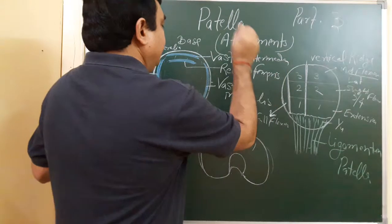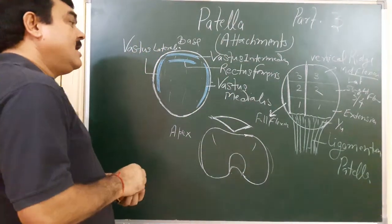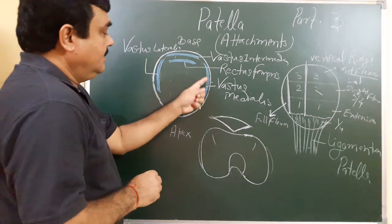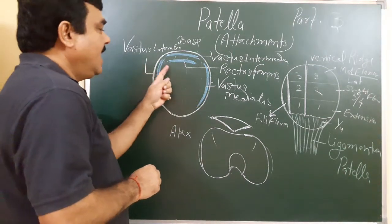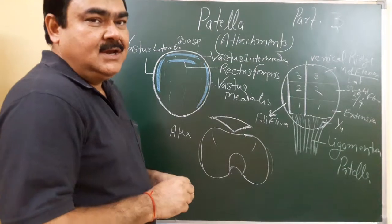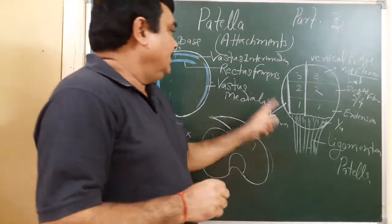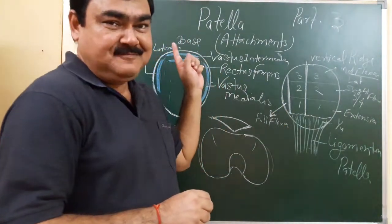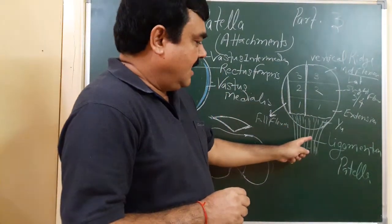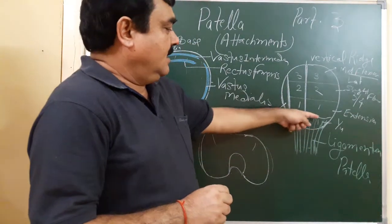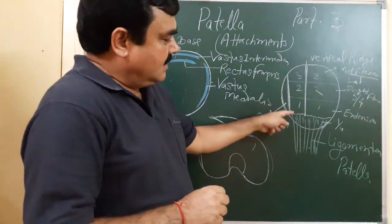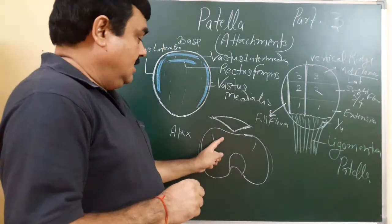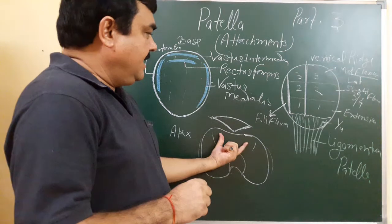So there are four muscles attached on the anterior surface of the patella. These muscles are known as quadriceps femoris. And on the posterior surface, this area is articular, which articulates with the condyles and intercondylar area of the femur.